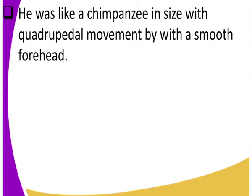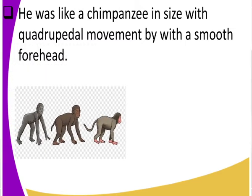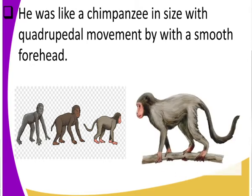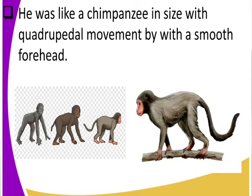The second feature of Diopithecus africanus: it was like a chimpanzee in size, with a quadrupedal movement, but with a smooth forehead. What do we mean by quadrupedal movement? It means it moved on four limbs — we have the front limbs and the hind limbs. So the chimpanzee is moving on four limbs. And as we said, the Diopithecus africanus was like a chimpanzee. It is more closely related to a chimpanzee — that is how the Diopithecus africanus looks.